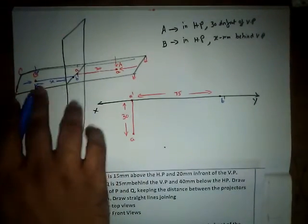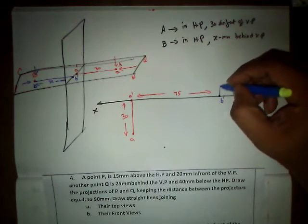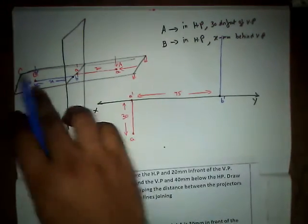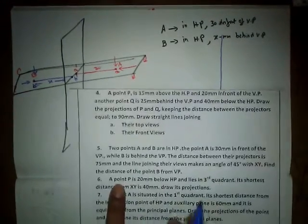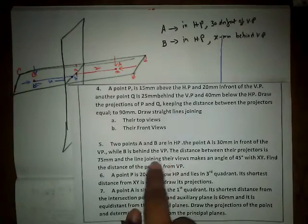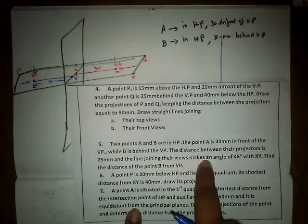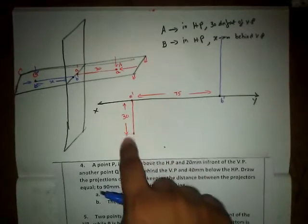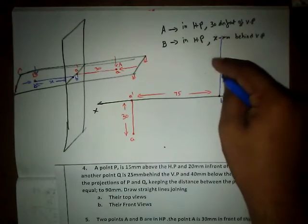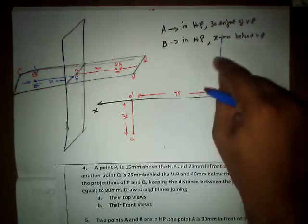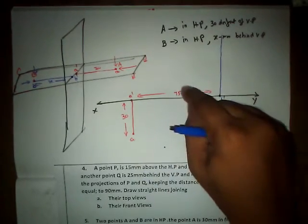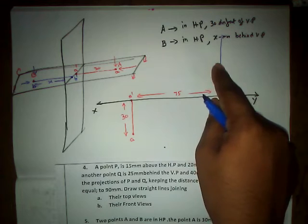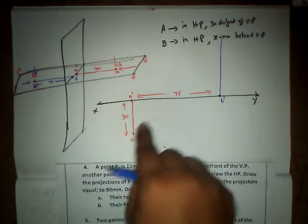We do not know the distance for B, so let us draw a line — the point B top view can lie anywhere above. According to the question, the line joining their top views makes 45 degrees with the XY reference line. So the line joining top view of A (small a) and top view of B (small b) must make 45 degrees with the XY ground line. We cannot directly take any point and say it makes 45 degrees.